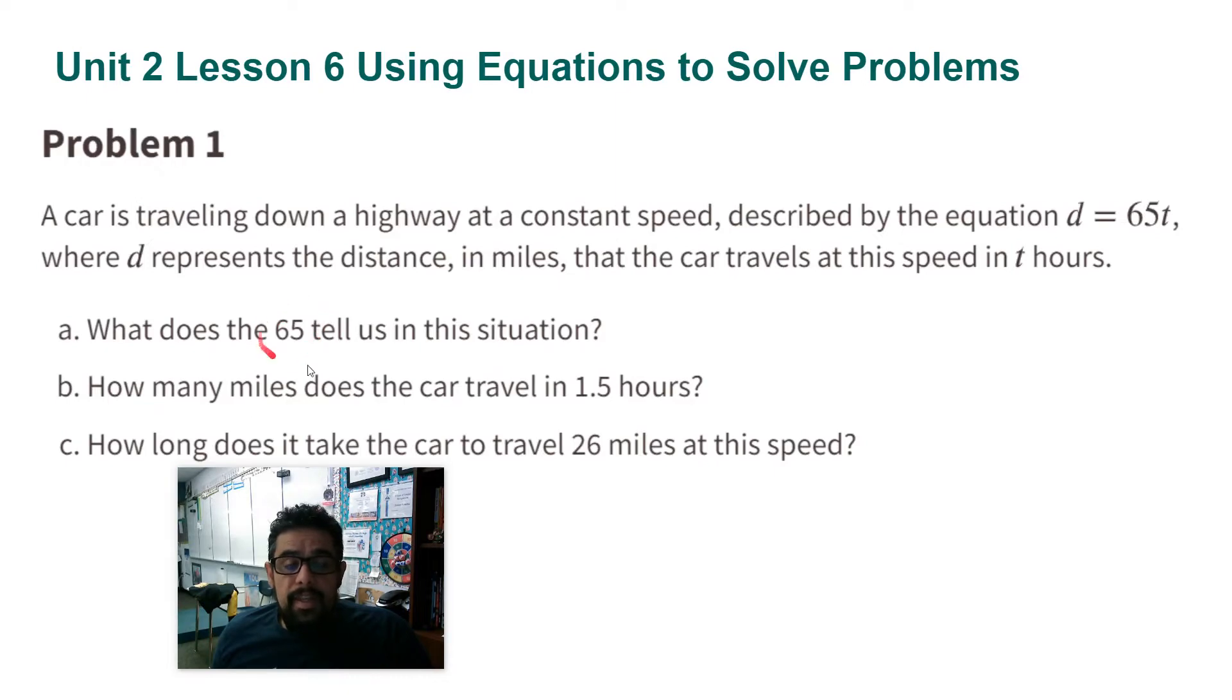So what does 65 tell us in this situation? 65 times the time tells you the miles, which means it's 65 miles per hour. This is the constant of proportionality. This is the unit rate, 65 miles per hour.